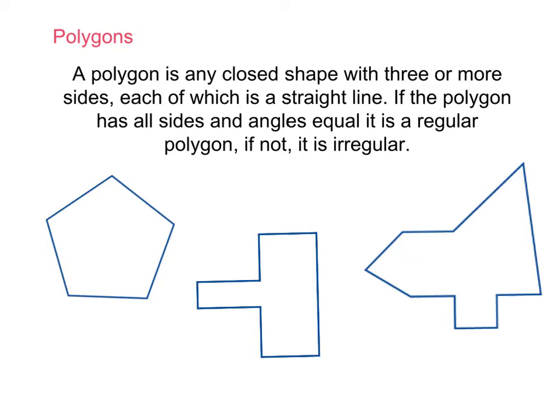Now, if all the sides and the angles are equal, it's regular. If not, it's called an irregular polygon. So you need to have written down that definition, and now we're going to have a look at a few common polygons.